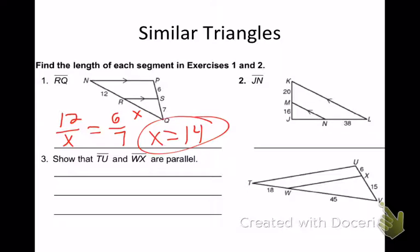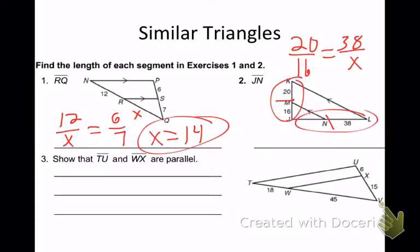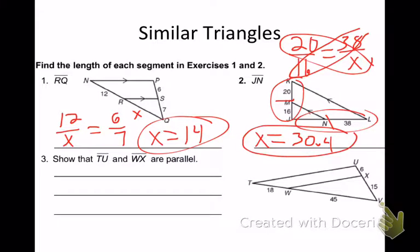Number 2, I need to set a proportion up. Jake O'Connor, you think he can set up a correct proportion? What do you got? Number 2? Nice job. 20 over 16 equals 38 over X. So I did 20 over 16 equals 38 over X. And now I use cross products to solve. So 38 times 16, divide that by 20. And you end up with JN or X has to equal 30.4. Nice job.